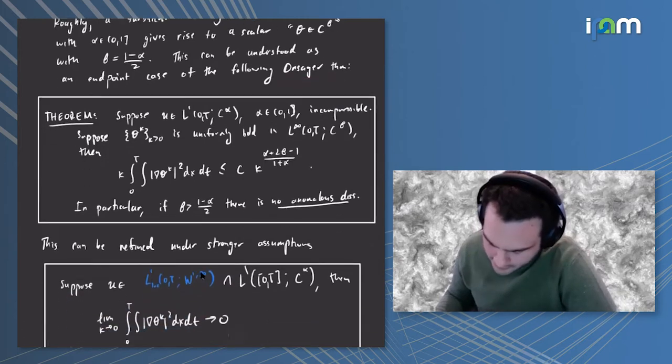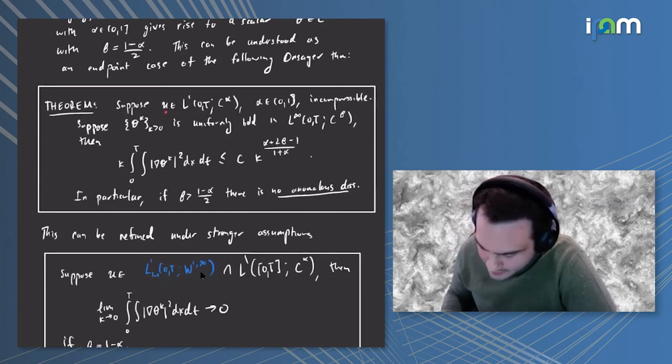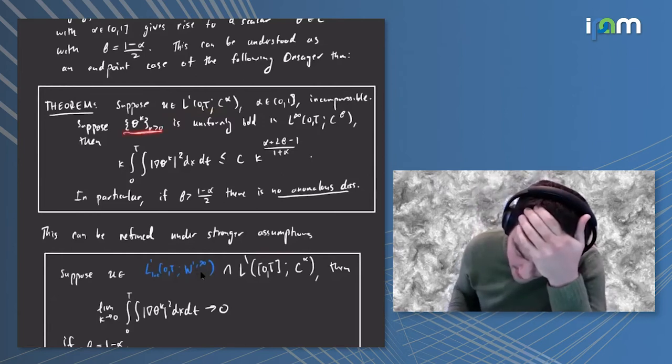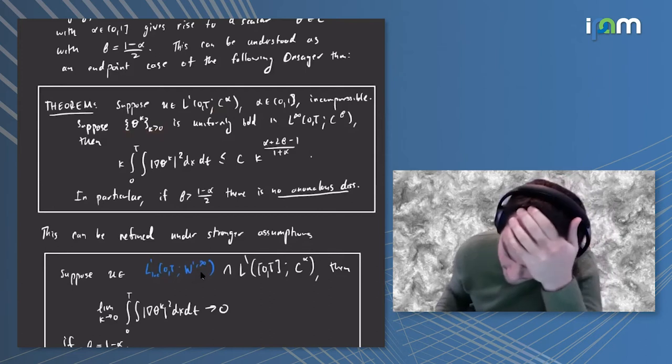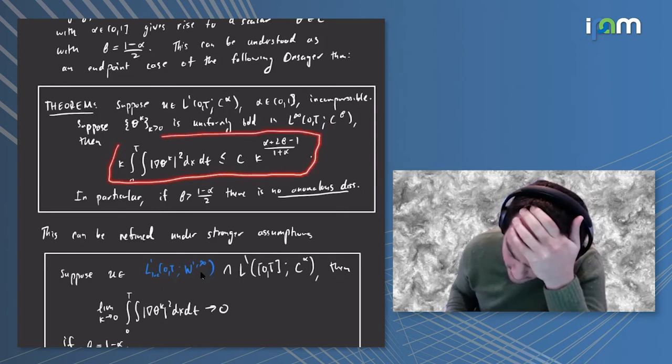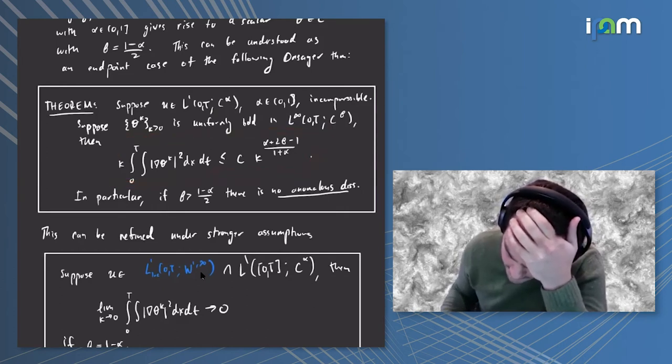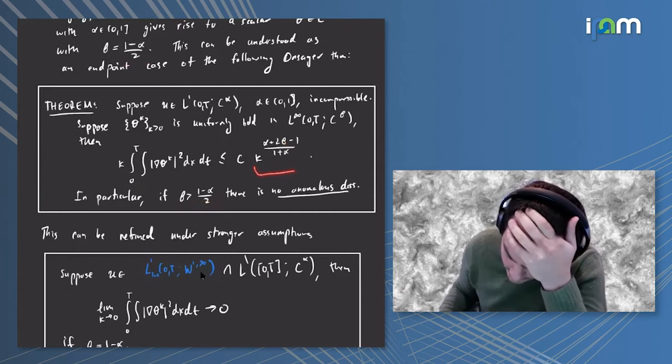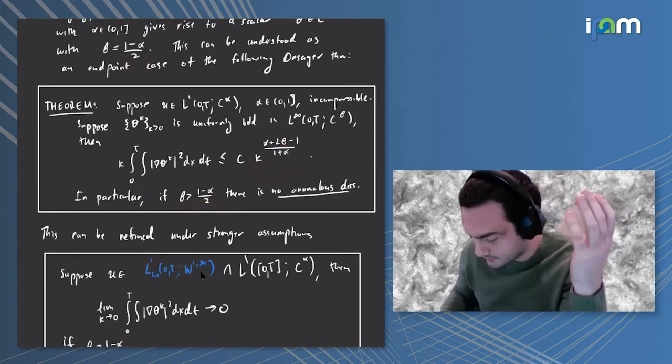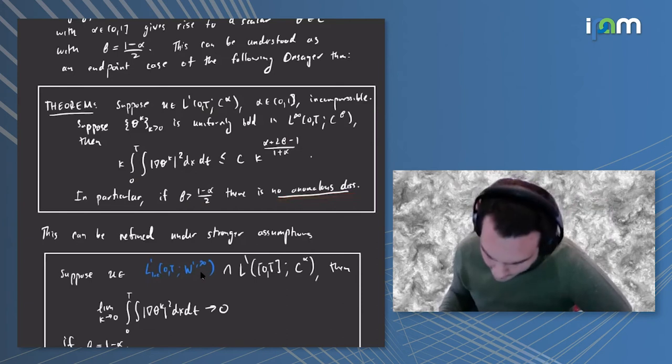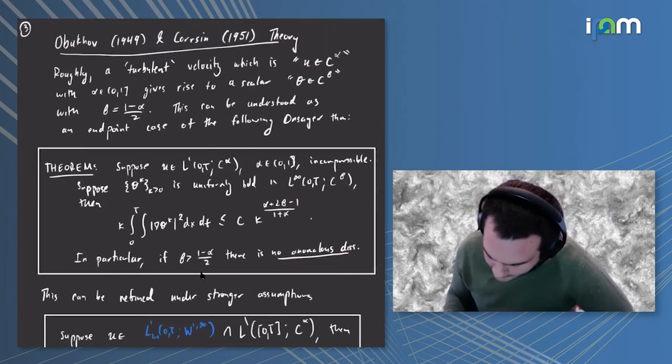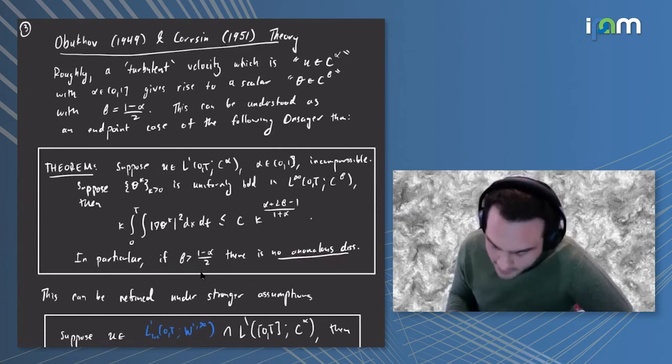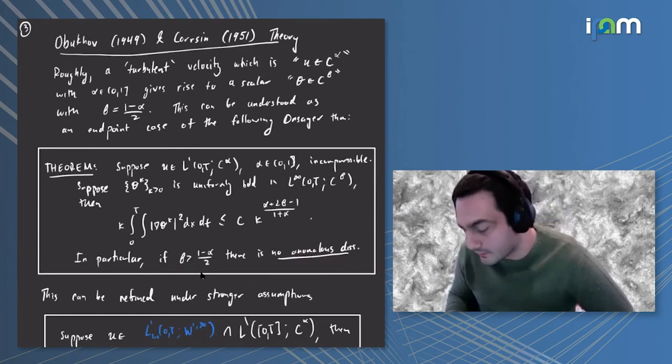If you have a velocity that is L1 in time with values in C^α which is incompressible, and you have a family of diffusive scalars uniformly bounded in C^β, then you have this bound on the scalar dissipation. In particular, if beta is bigger than that value I set up, the dissipation goes to zero like some power of the diffusivity.